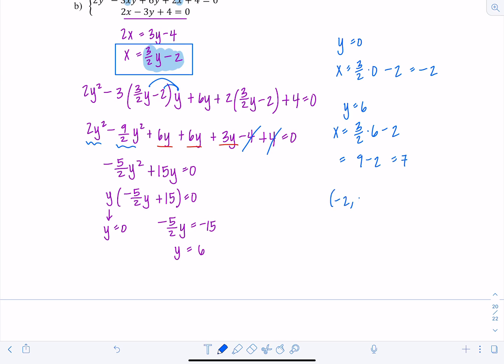So your solution contains the ordered pairs negative 2, 0, as well as 7 comma 6.